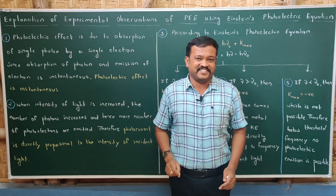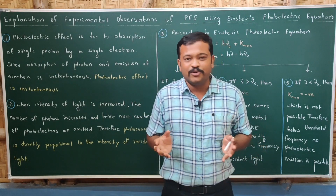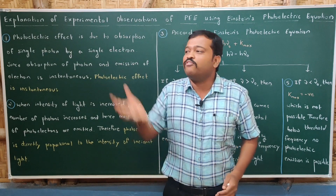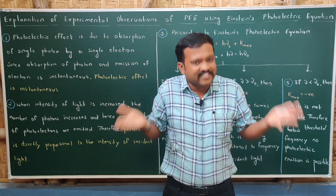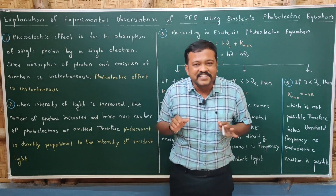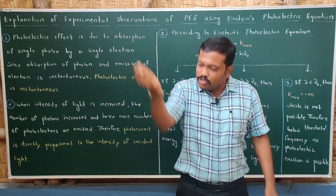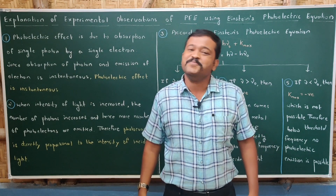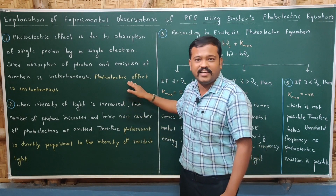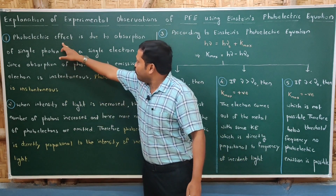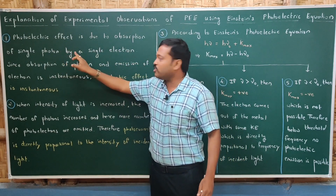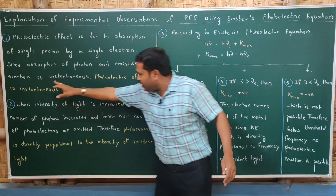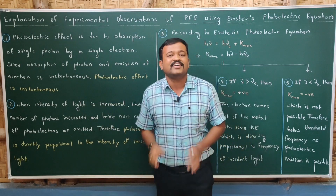Why is photoelectric effect instantaneous? Photoelectric effect is a phenomenon due to absorption of a single photon by a single electron. The process of absorption of the photon and emission of the electron is instantaneous. Therefore, photoelectric effect is instantaneous — the time gap between absorption of a photon and emission of an electron is very small, even less than 10⁻⁹ seconds.